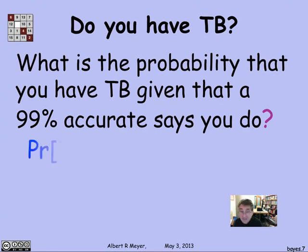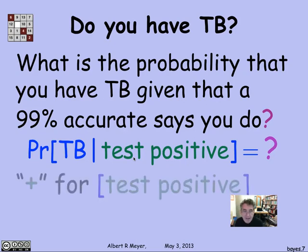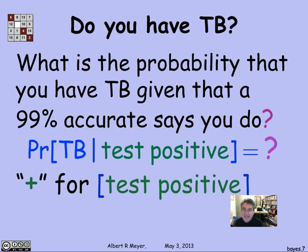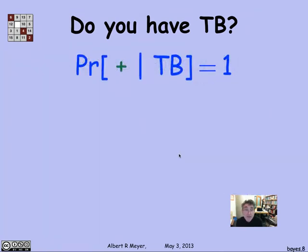What's the probability that you have TB? I want the conditional probability that I have TB given that the test comes in positive — the test says yes, you have TB. "Test positive" is a bit wordy, so let's abbreviate it as plus. Plus means the test said positive — you have TB. That's the conditional probability we're trying to calculate.